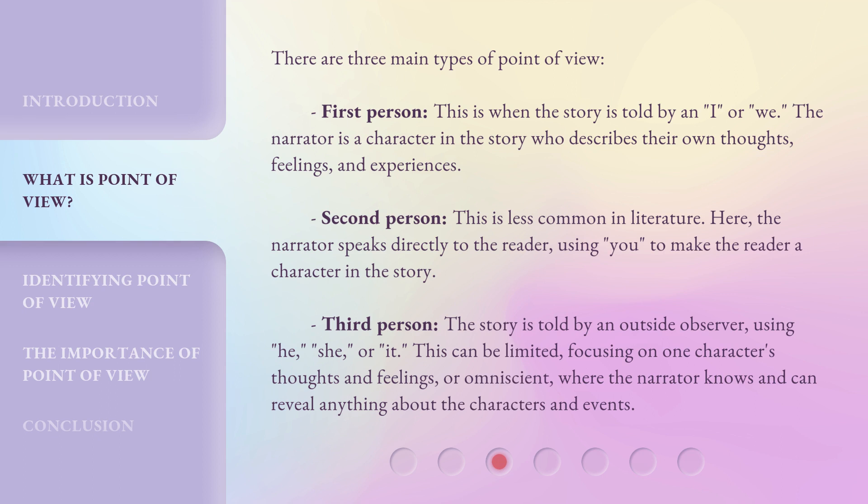Second person: this is less common in literature. Here, the narrator speaks directly to the reader, using 'you' to make the reader a character in the story. Third person: the story is told by an outside observer, using 'he,' 'she,' or 'it.' This can be limited, focusing on one character's thoughts and feelings, or omniscient, where the narrator knows and can reveal anything about the characters and events.